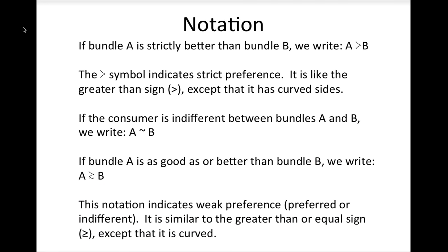The slope of an indifference curve tells us useful information about a consumer's preferences. This slope is called the marginal rate of substitution, or MRS. It tells us how many units of good 2 the consumer is willing to give up to get an additional unit of good 1 and remain equally well off. On a typical indifference curve, when the consumer has a lot of good 2 and little good 1, she is willing to give up a lot of good 2 for one more unit of good 1. When she has a lot of good 1, she is willing to give up less. Thus the MRS diminishes as you move down the indifference curve — this is diminishing marginal rate of substitution, an example of the principle of diminishing returns.